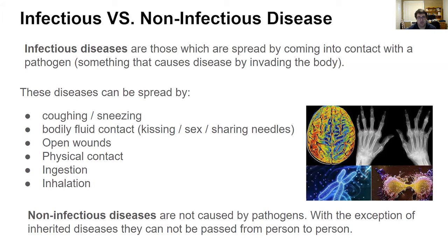To contrast that: if infectious disease is caused by pathogens, the other type of disease we need to be mindful of — which we'll cover in Module 8 — is non-infectious disease. These are not caused by pathogens. With the exception of inherited diseases, which do fall under non-infectious diseases, they can't be passed from person to person. Non-infectious diseases in most cases are usually caused by the absence of something the person requires — often nutritional deficiencies, but also genetic diseases. The one way a non-infectious disease can be passed from person to person is from parent to child.